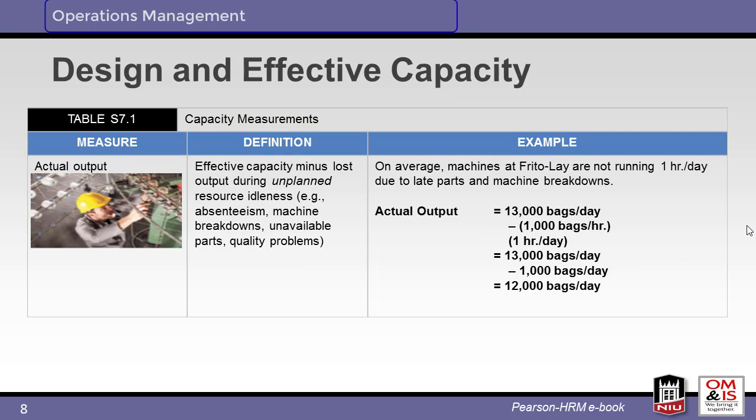Finally, the actual capacity builds upon the previous analysis, but also includes unplanned downtime like material shortages and machine breakdowns. The actual capacity is calculated as 12,000 bags per day — a 25% reduction from design capacity.